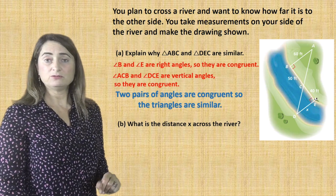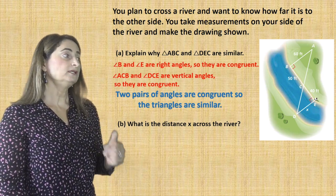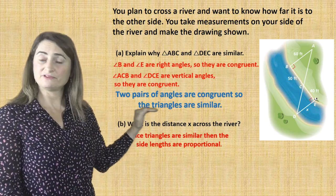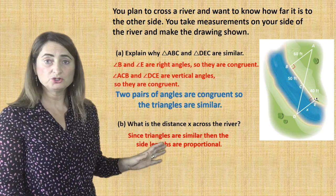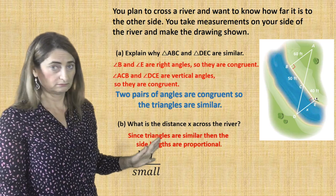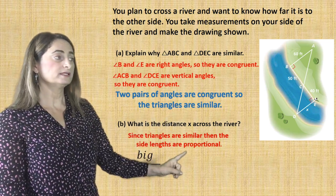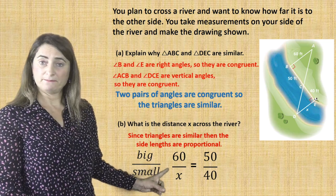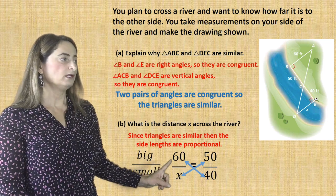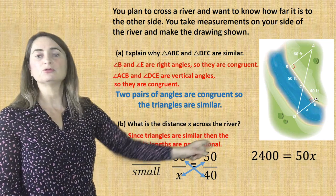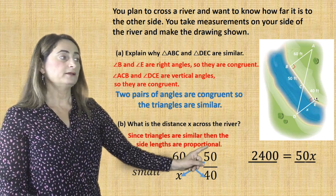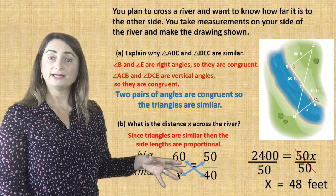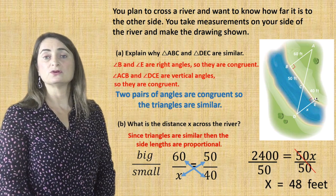What is the distance x across the river, which is the width of the river? Since the triangles are similar, the side lengths are proportional. We learned how to set up a proportion using fractions — big to small or small to big; it depends on what you choose, but stick with it. I'll choose big to small. So 60 over x equals 50 over 40. Since it's a proportion, use cross multiplication: 60 times 40 is 2400, and 50 times x equals 50x. Divide both sides by 50 — you end up with x equals 48. So the width of the river is 48 feet.